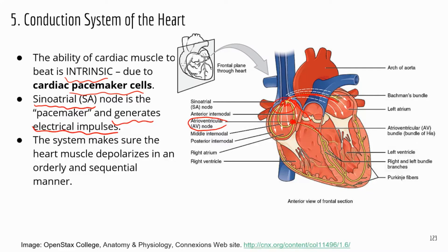The AV node is here. The signal comes down the AV bundle, also known as the bundle of His, and continues to travel down the right and left bundle branches, going through the interventricular septum. After the left and right bundle branches, the electrical signals are conducted by the Purkinje fibers into the wall of each ventricle.